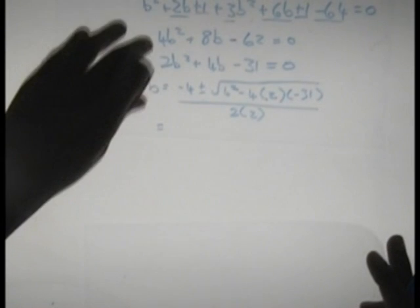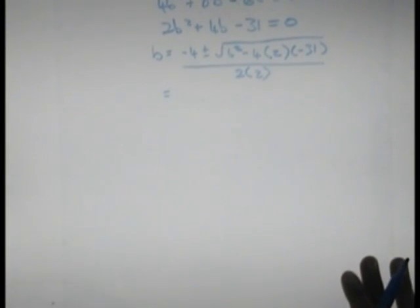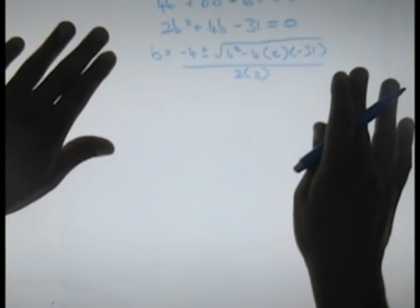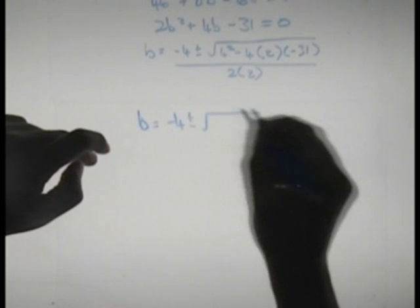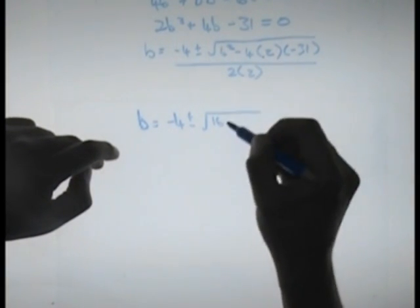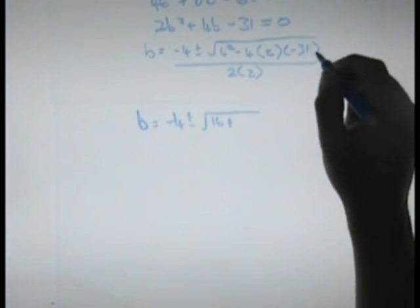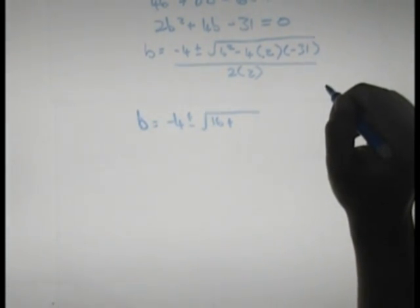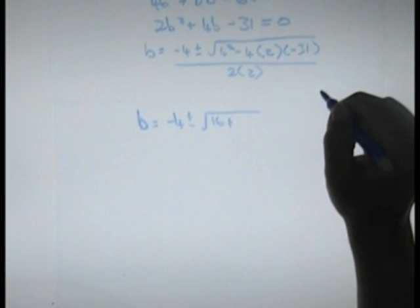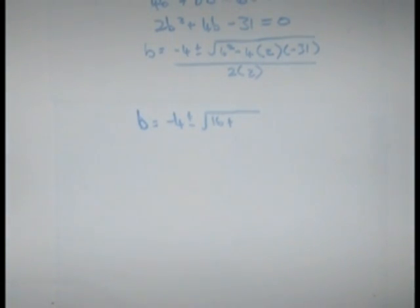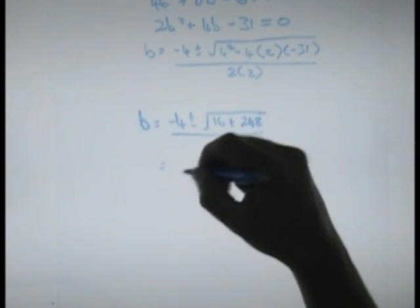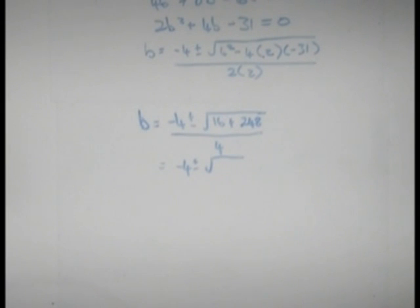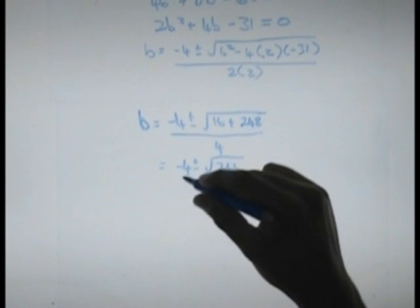Minus 4 plus minus square root of 4 squared minus 4ac is going to give me b values of either minus 4 plus or minus. 4 squared is 16. Minus 4 minus times a minus is plus. 4 times 2 is 8. 8 times 31 is equal to 248 divided by 4. That's going to be minus 4 plus minus square root of 248 plus 16 which is equal to 264 over 4.